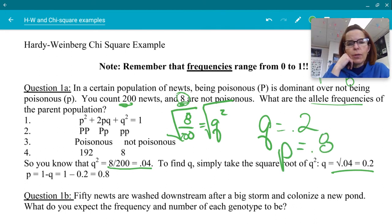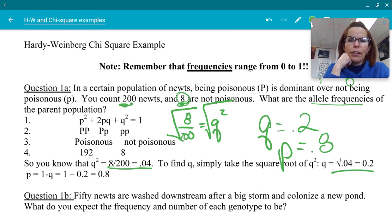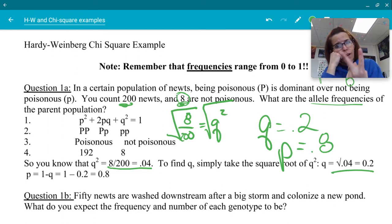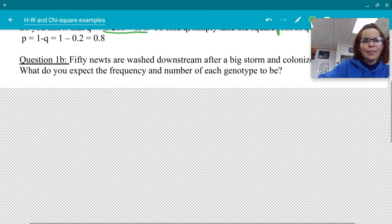And what that means, remember that P plus Q equals 1. So we need to calculate P. So 1 minus 0.2, P is 0.8. So we have just answered question 1A. What are the allele frequencies? 20% of the alleles total are the recessive and 80% of the alleles total, remember each animal gets two of these alleles, 80% of them are the dominant trait. All right. So now moving on.